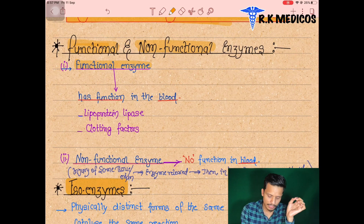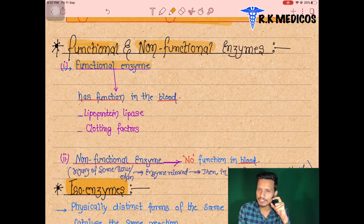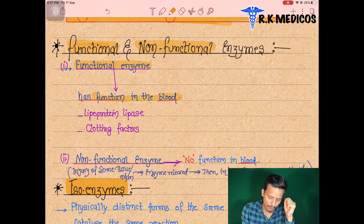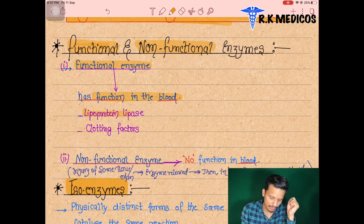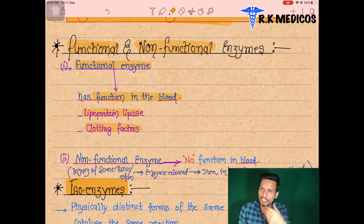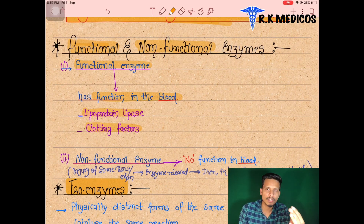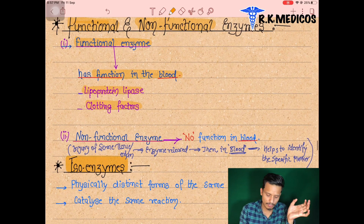Functional enzymes are those which perform their function in the blood. Examples include lipoprotein lipase and the clotting factors. All types of clotting factors are present in our blood and perform their function in the blood. Lipoprotein lipases are also a type of functional enzyme.